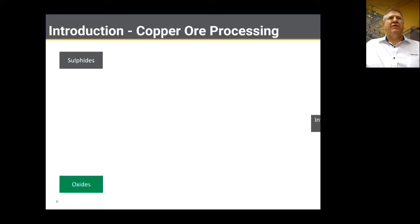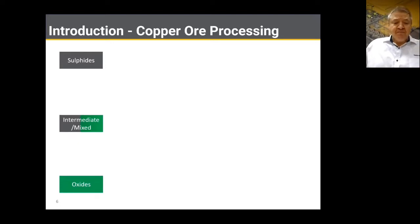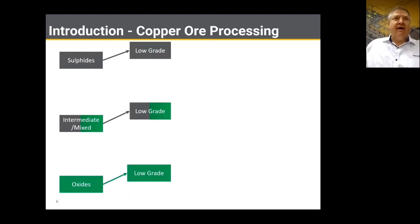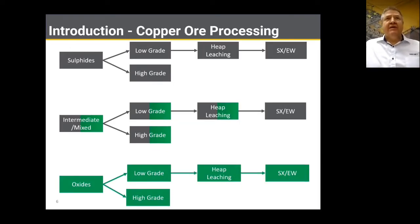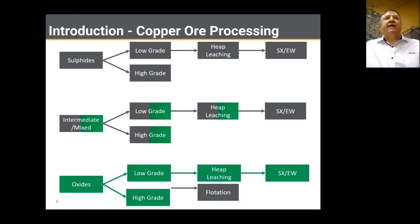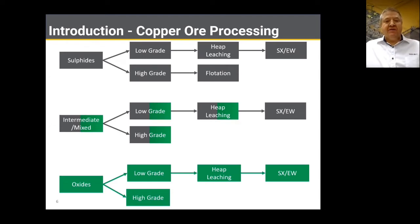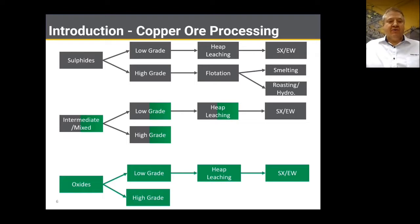There are three predominant copper ores: sulfides, oxides, and intermediate ore. All of these can be either low-grade or high-grade. The low-grade ore is processed predominantly by heap leaching, followed by solvent extraction and electrowinning. The high-grade sulfide is usually flotation, followed by either smelting or roasting and a hydrometallurgical route.